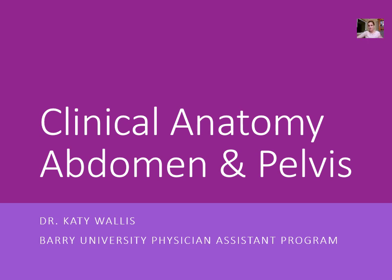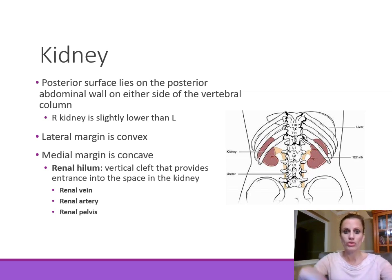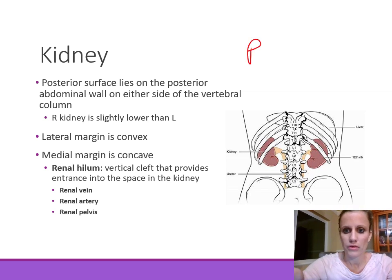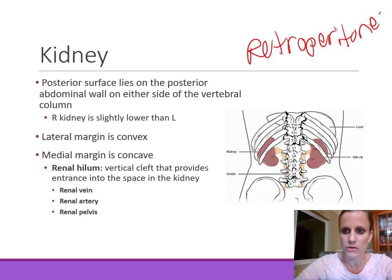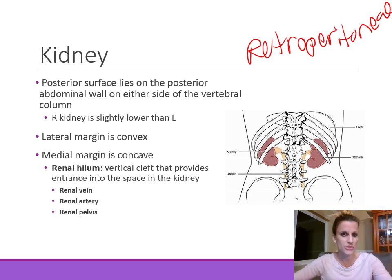Welcome to Clinical Anatomy for PA Students. Today we'll continue our discussion of the abdomen and move down into the pelvis. We'll start by talking about the kidneys. The left and right kidneys are both located retroperitoneally in the retroperitoneal space, meaning they're located posterior to the peritoneal cavity or posterior to the peritoneum.